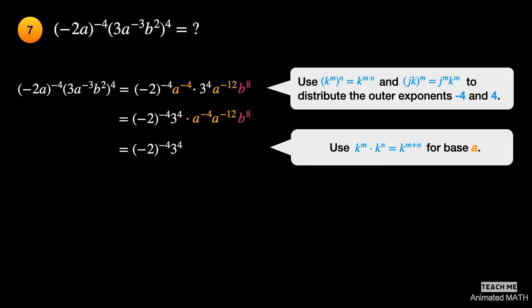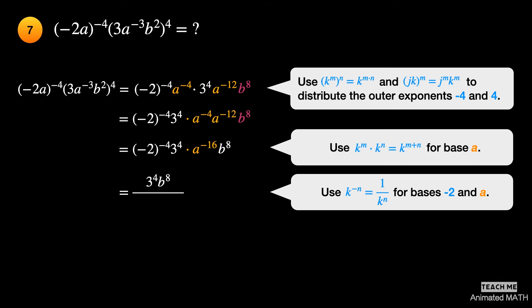Use the fifth property for base a — the new exponent of a is negative 4 plus negative 12, or negative 16. Use the fourth property for bases negative 2 and a. Expanding 3 to the 4th power to 81, and negative 2 to the 4th power to 16, gives a final answer of 81b to the 8th power divided by 16a to the 16th power.